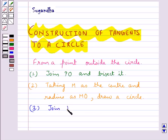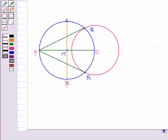So, PQ and PR are the required two tangents.